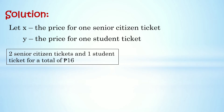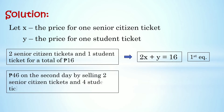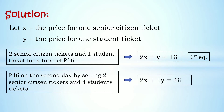Sa ating problem, we have two senior citizen tickets and one student ticket for a total of 16 pesos. So i-convert po natin siya into an equation: we have 2x + y = 16 — that is our first equation. Then sa ating problem meron ding statement na 46 pesos on the second day by selling two senior citizen tickets and four student tickets. I-convert po natin siya into equation: 2x + 4y = 46 — that will be our second equation.